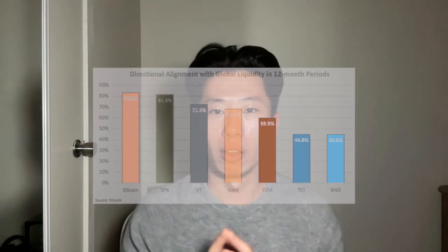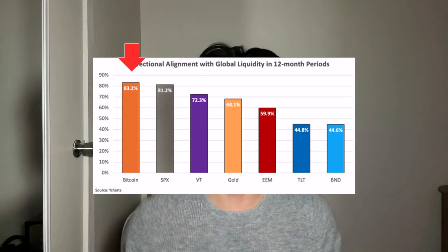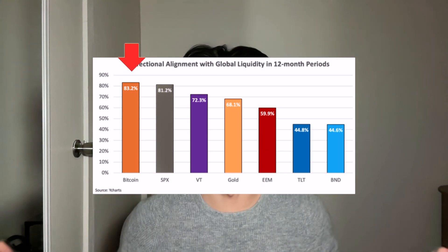And that metric is called M2, also known as global liquidity. Lynn Alden recently wrote a research article about M2 and found that the Bitcoin price follows M2 83% of the time, which is higher than any other asset class.